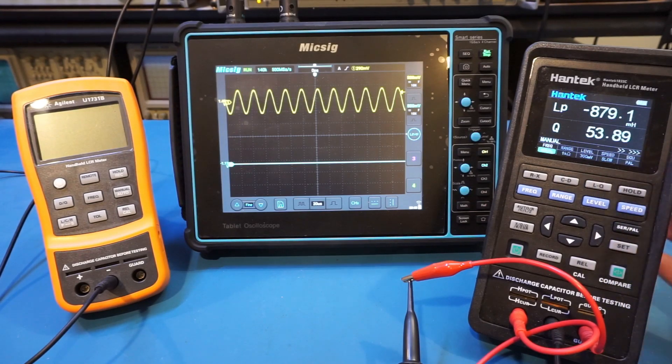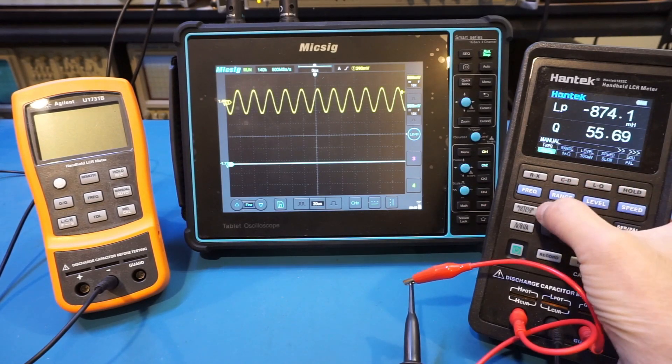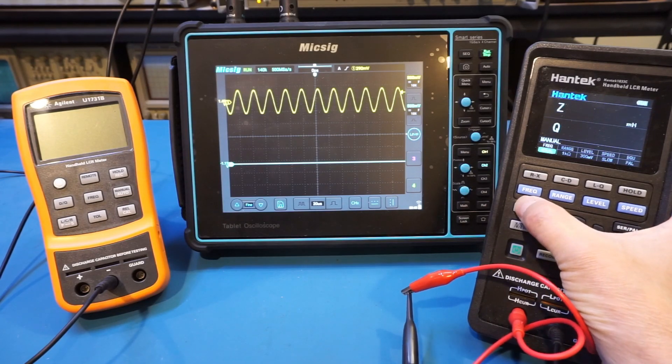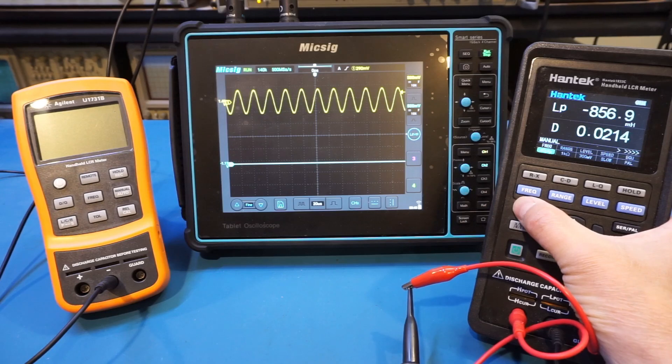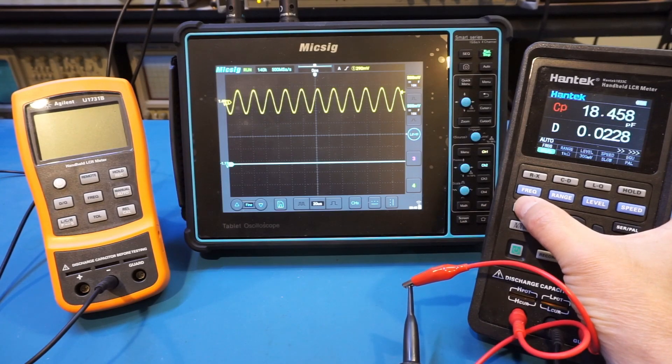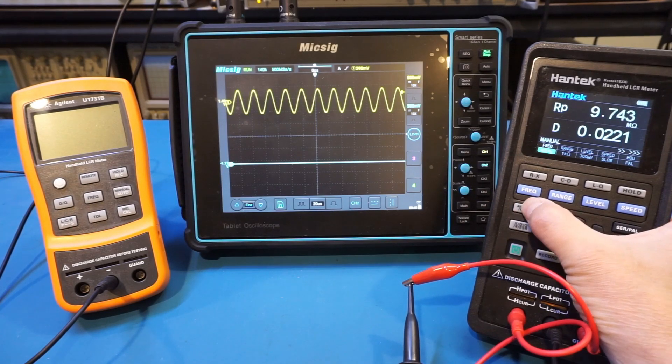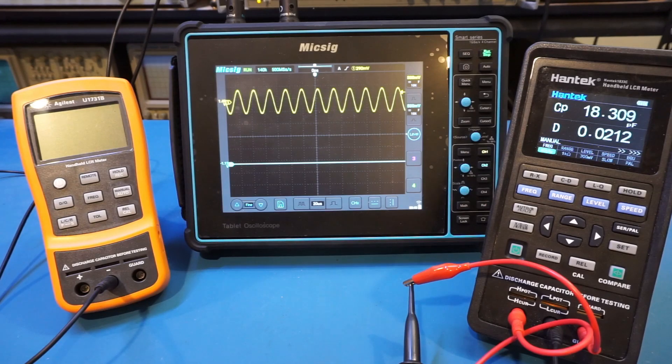And you can see that as I cycle through the measurement range, I don't see a waveform coming from the guard terminal either. So it appears that the guard terminal doesn't do anything at all on this meter.